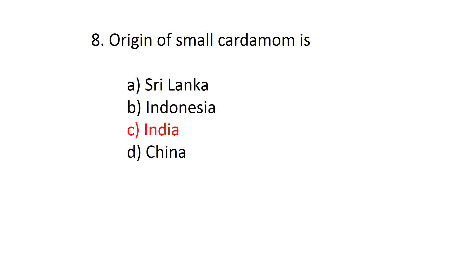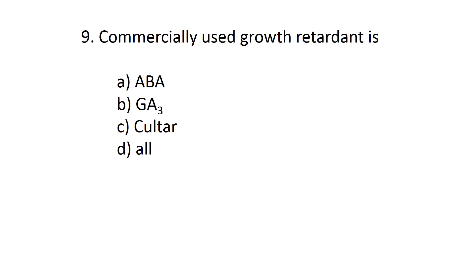Answer is option C, India. Commercially used growth retardant is option A: abscisic acid, B: gibberellic acid, C: cycocel, and option D: all of the above.